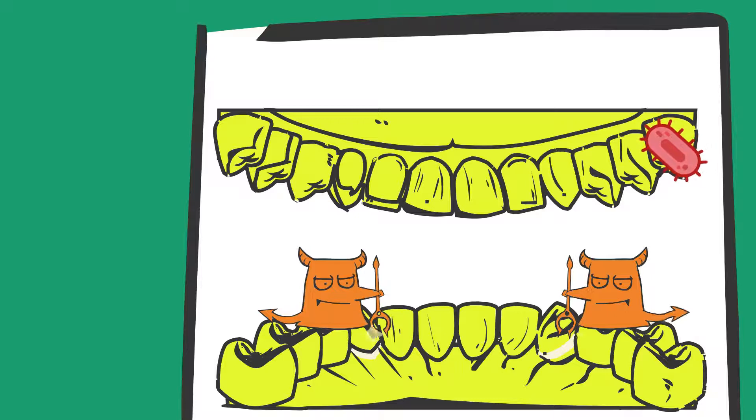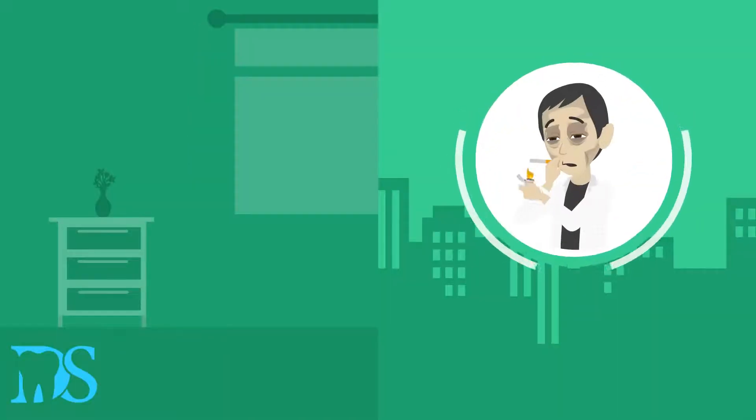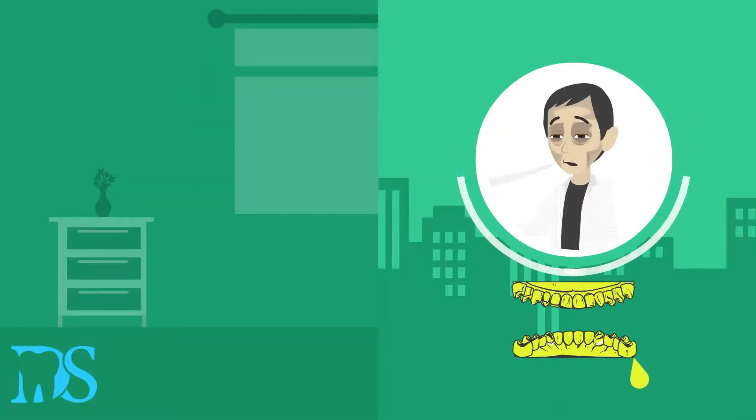But what exactly is the smoke doing to your mouth? As soon as you inhale on a cigarette, the toxins in the smoke start affecting your saliva. These toxins destroy the enzymes and proteins in your saliva, causing the saliva to lose its role in your mouth.